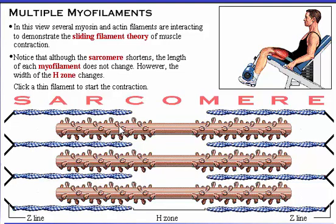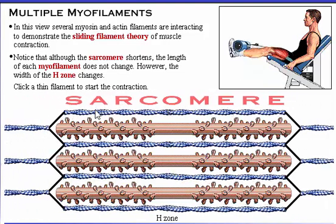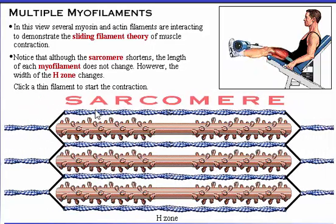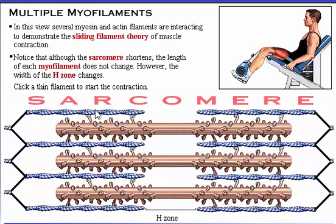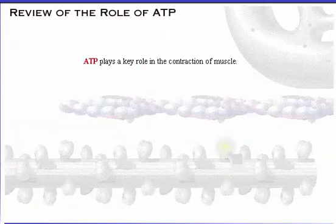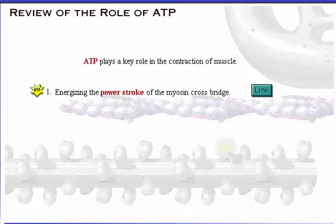We've seen that ATP plays a key role in the contraction of muscle. Before we study muscle metabolism, let's review ATP's role in: 1. energizing the power stroke of the myosin crossbridge; 2. disconnecting the myosin crossbridge from the binding site on actin at the conclusion of a power stroke; and 3. actively transporting calcium ions into the sarcoplasmic reticulum. Click the link buttons to review these roles.